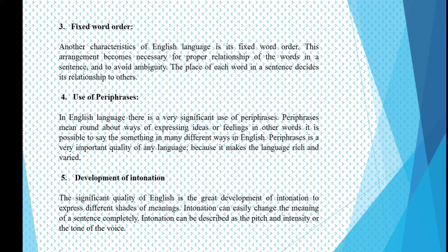Another characteristic of English language is its fixed word order. This arrangement becomes necessary for proper relationship of the words in a sentence and to avoid ambiguity. The place of each word in a sentence decides its relationship to others. There is also a very significant use of paraphrases in English. Paraphrases mean roundabout ways of expressing ideas or feelings — it is possible to say the same thing in many different ways. Paraphrase is a very important quality of any language because it makes the language rich and varied.